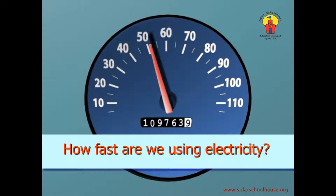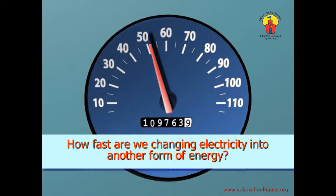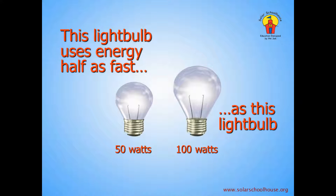There's one more electrical term we need to know. We need to be able to measure how fast we are using electricity — just like a speedometer in a car measures how fast we are moving in miles per hour. We need a way to measure how fast we are using electricity, or in other words, how fast we are converting electrical energy into another form of energy. Look at these two light bulbs. The small light bulb uses less electricity than the big light bulb — it uses electricity more slowly. The big light bulb uses electricity twice as fast as the small light bulb.